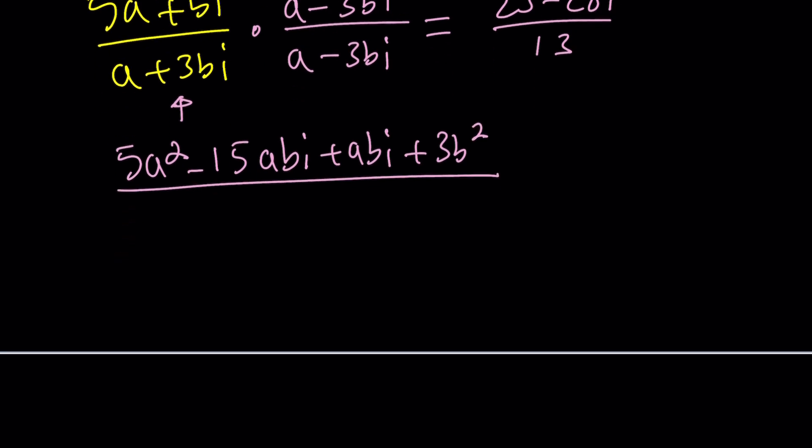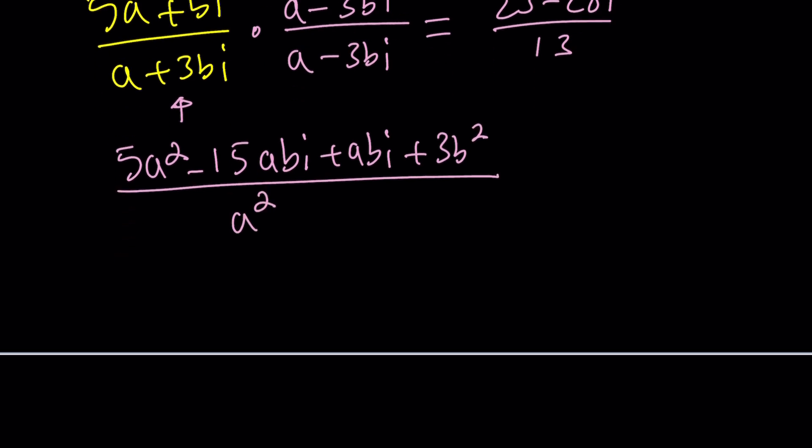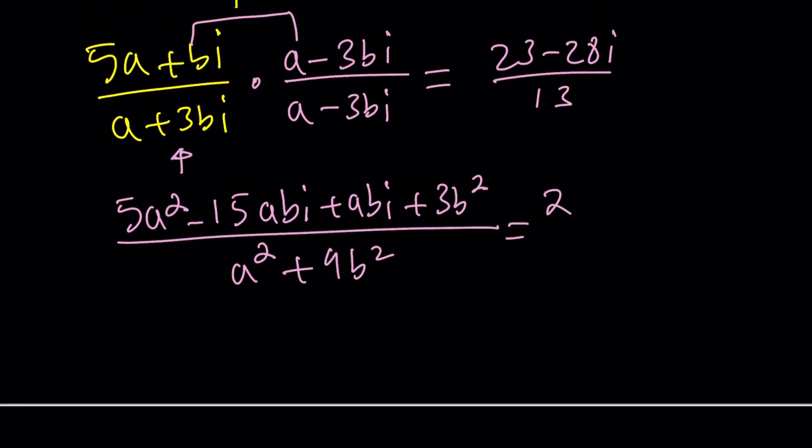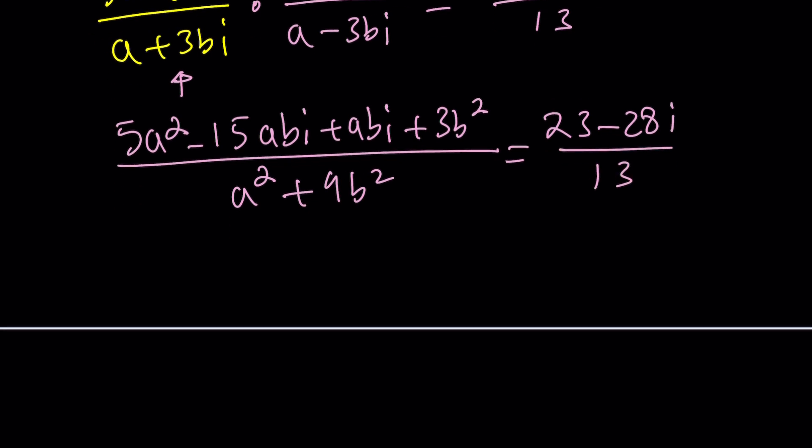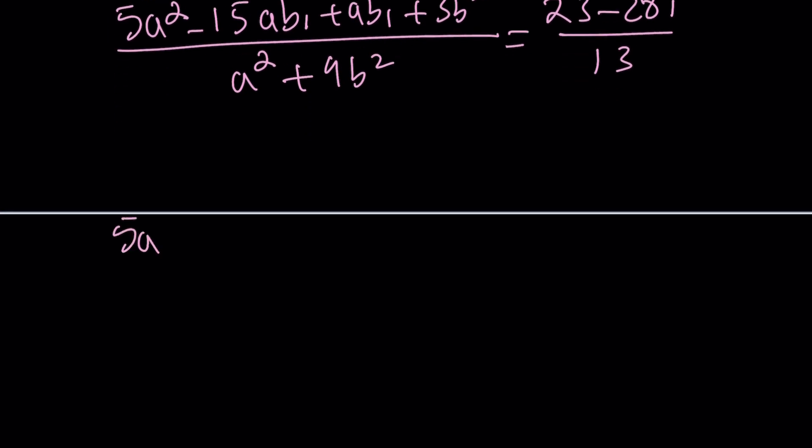Did I tell you i squared is negative 1? So that'll give us plus 3b squared from here. And at the denominator we'll have sum of 2 squares. Remember that a squared plus 9b squared. And then this equals 23 minus 28i divided by 13.